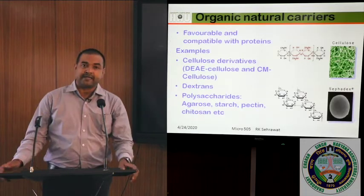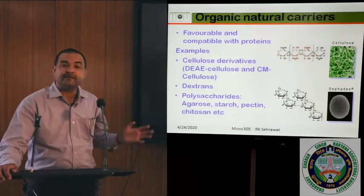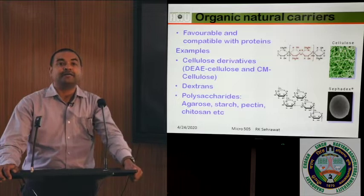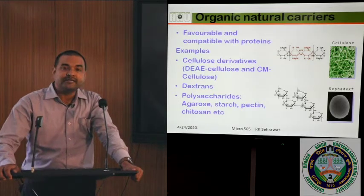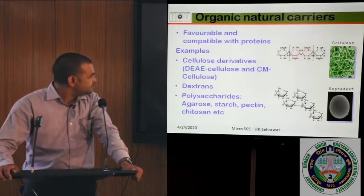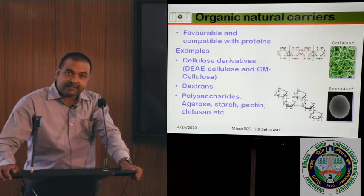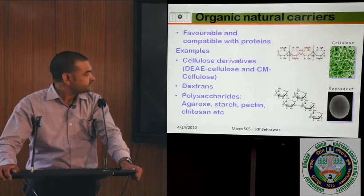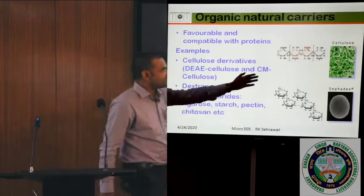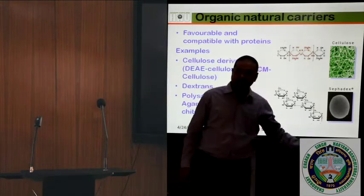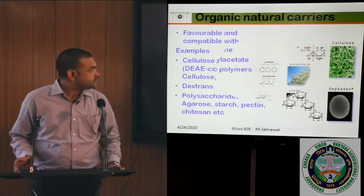Organic natural carriers are favorable and compatible with proteins because they are available naturally. Examples are cellulose derivatives including DE cellulose and CM cellulose, then a class of dextrans, then polysaccharides which include alginate, starch, pectin, chitosan, etc. Cellulose and Sephadex are used as organic natural carriers for immobilization.